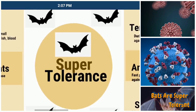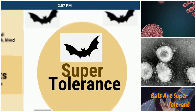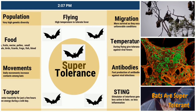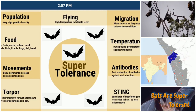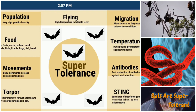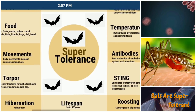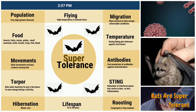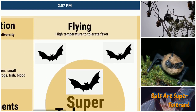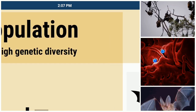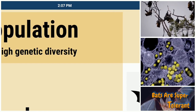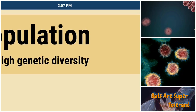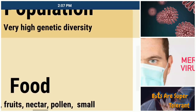How did bats get super-tolerance? There are different reasons related to the in-built properties of bats — their population structure and their food habits. These properties made them super-tolerant against different kinds of viruses. Because of their heterogeneous population, there is very high genetic diversity, which makes the species survive and fight against viruses.